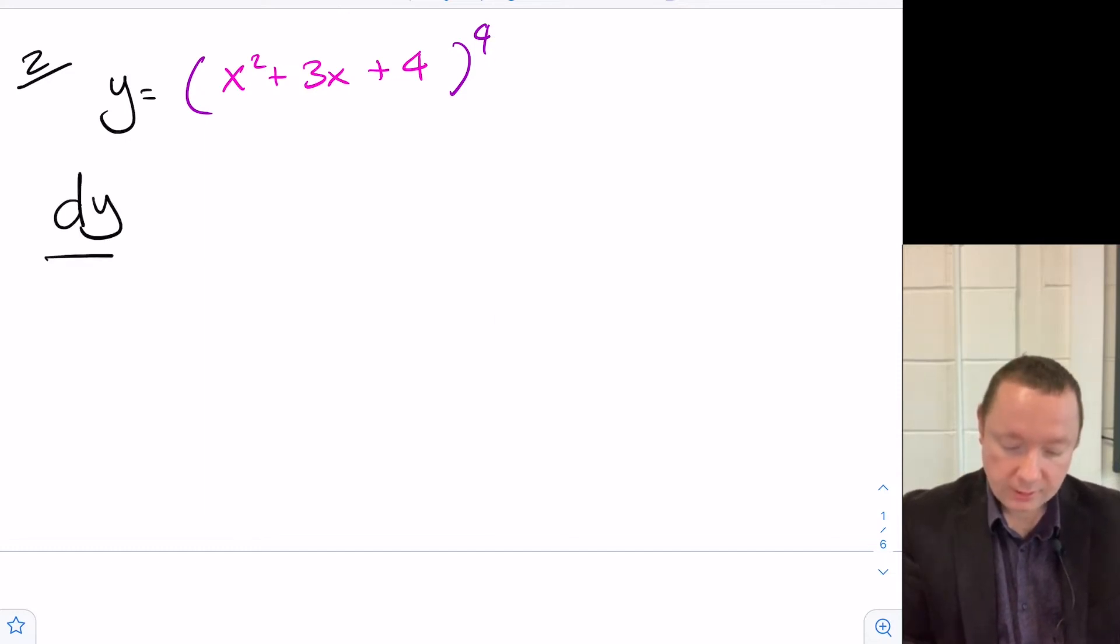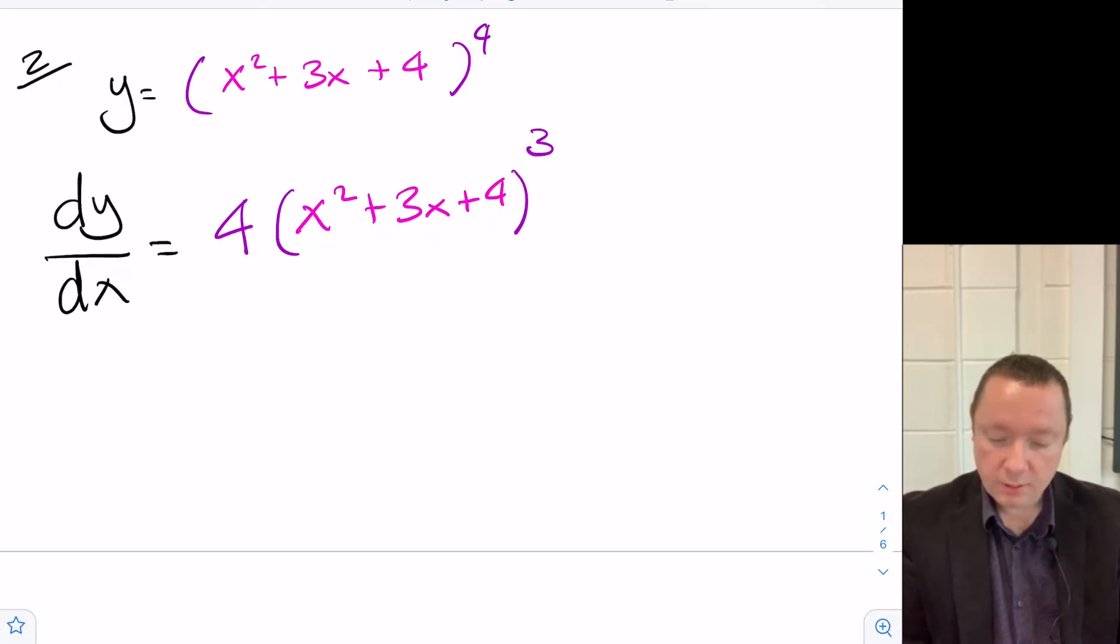So dy/dx equals, take the 4 down to the front, leave the inside alone, and reduce the power by 1. So I've done my first differentiation. The inside is just x squared plus 3x plus 4. I now need to differentiate the inside part. So it's going to be times by x squared. You can differentiate using the power rule to 2x. 3x becomes 3 and 4 becomes nothing.